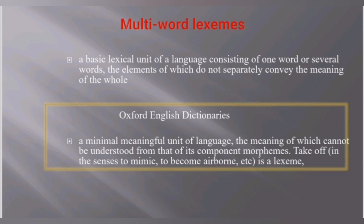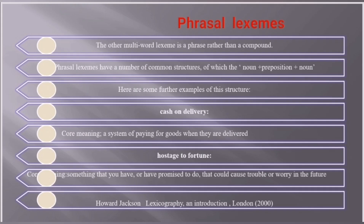The other multi-word lexeme type is the phrasal lexeme. Rather than a compound, phrasal lexemes have a number of common structures, one of which is noun + preposition + noun. For example, 'cash on delivery' — a system of paying for goods when they are delivered. Another example is 'hostage to fortune,' following the noun + preposition + noun structure, where joined together they give a whole meaning.